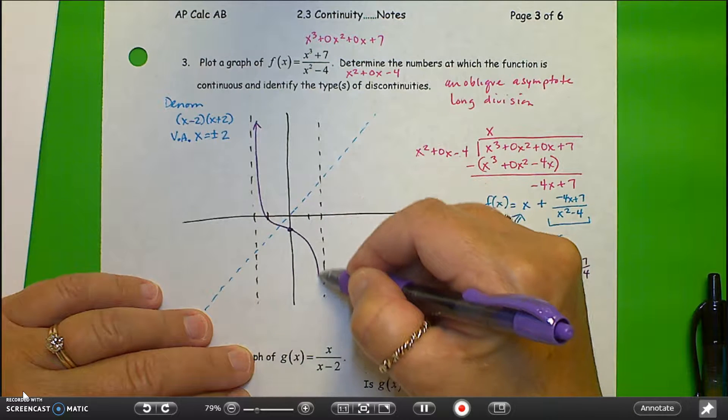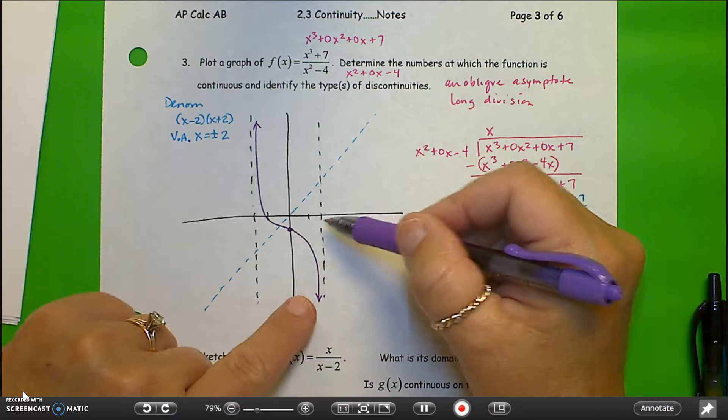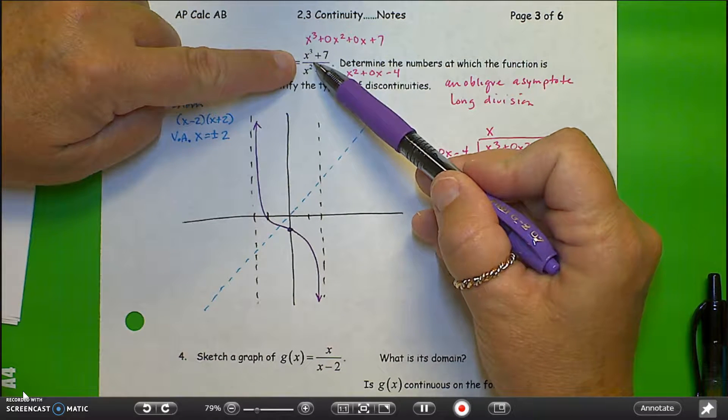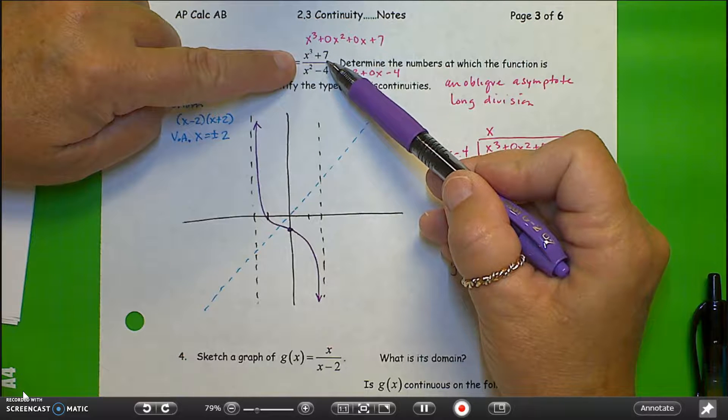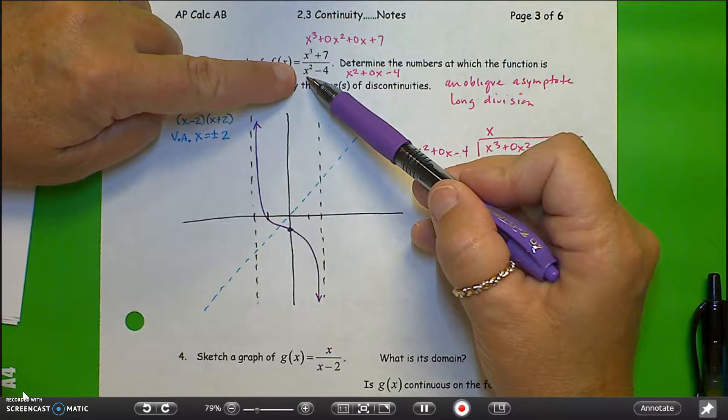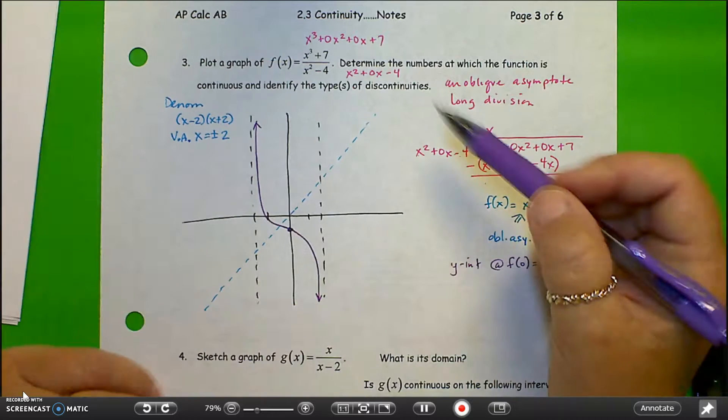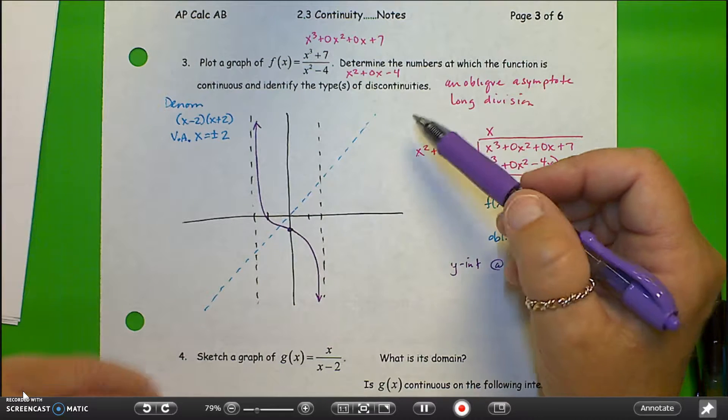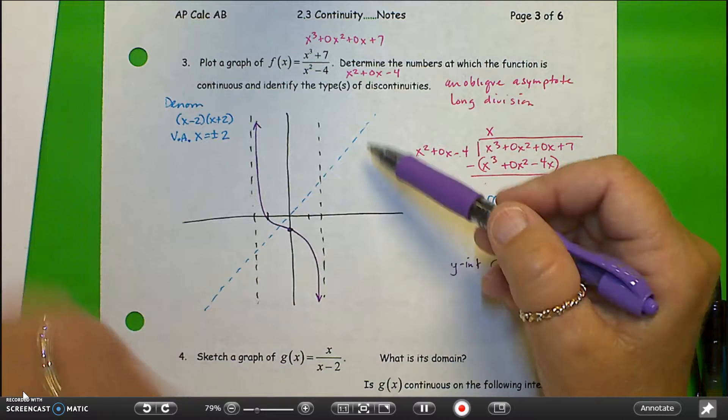I'm going to continue the graph this way. If I look at positive 2 from the left, put in a number like 1.9, this is positive in the numerator. It's negative in the denominator, so I know I'm headed toward negative infinity.